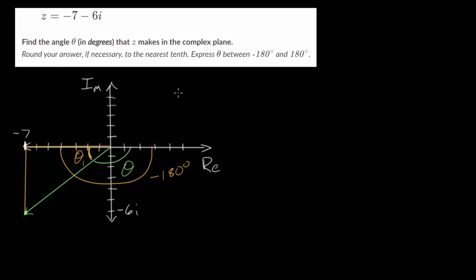So going halfway around would bring us to negative 180 or negative pi if we were in radians. But since we know this entire angle is negative 180, if we figure out this angle theta 1, we can just add that to this to figure out this angle theta.